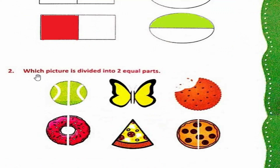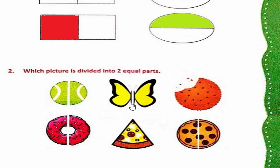Question number two: Which picture is divided into two equal parts? The butterfly is divided into two equal parts. The donut is divided into two equal parts. And the cookie is divided into two equal parts.